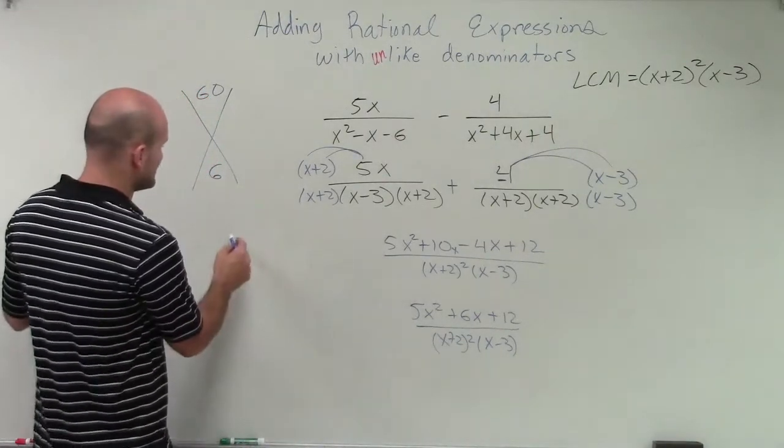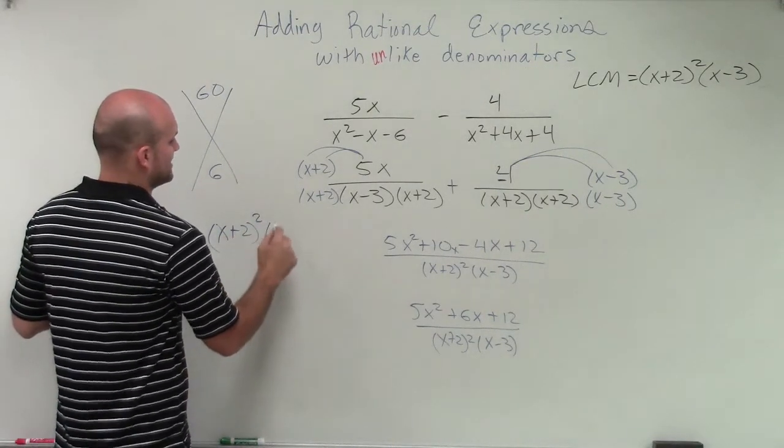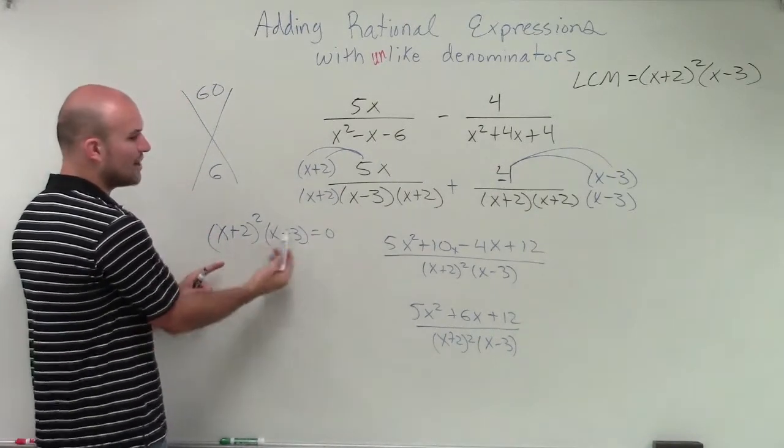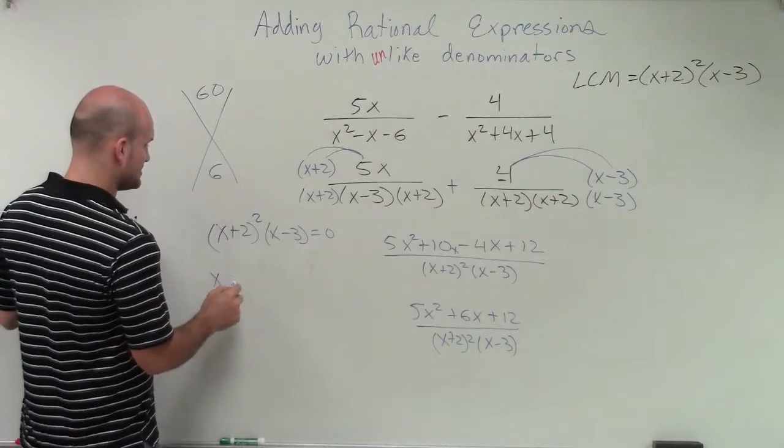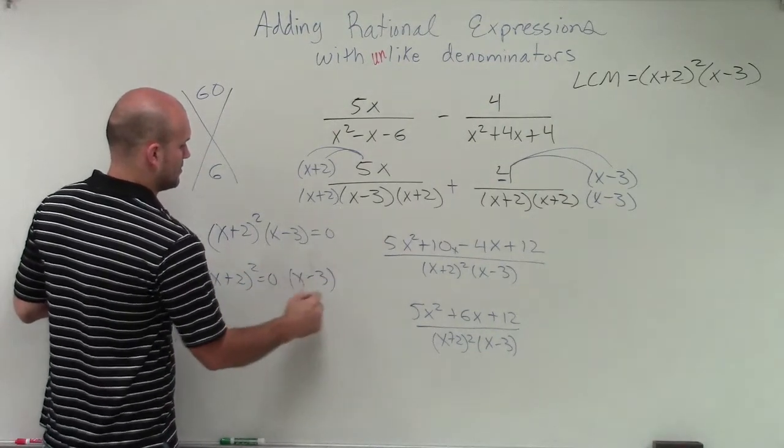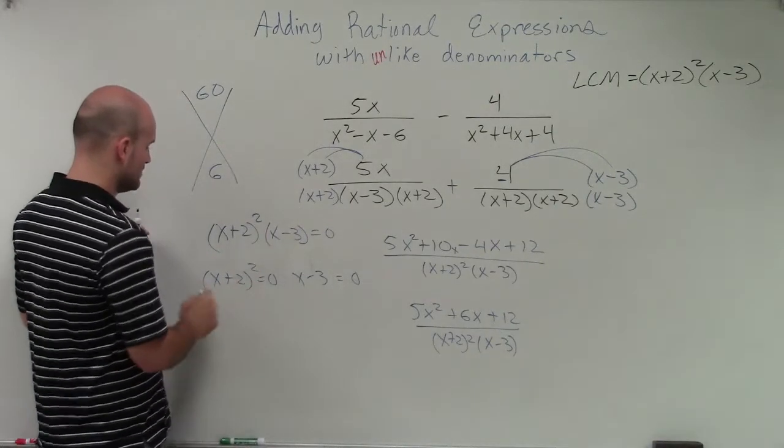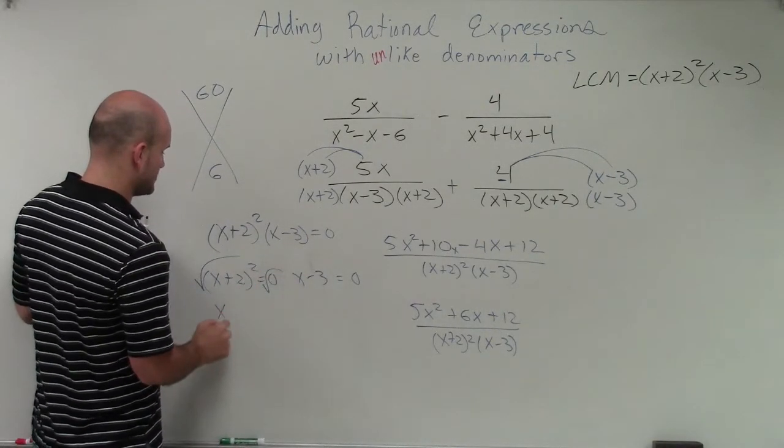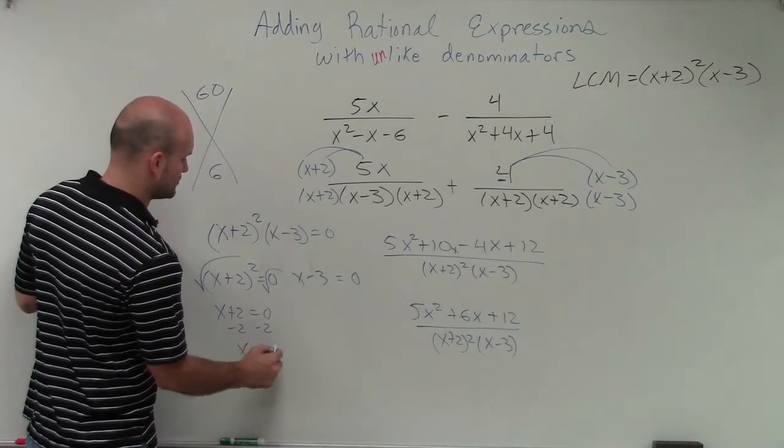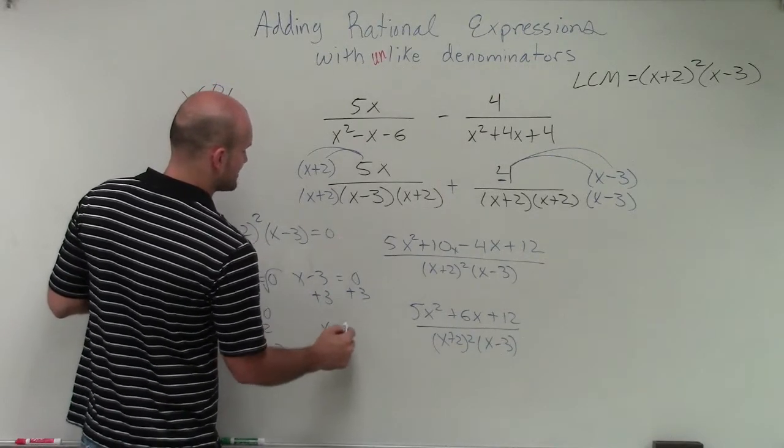So now, I have x plus 2 squared times x minus 3. If I just need to find the constraints or restrictions, I will set my denominator equal to 0. Now, when I have a product equals 0, I can use the zero product property. I take the square root using the square root method. So I have x plus 2 equals 0, minus 2, minus 2. x equals negative 2. And over here, I have a positive 3, positive 3. x equals positive 3.